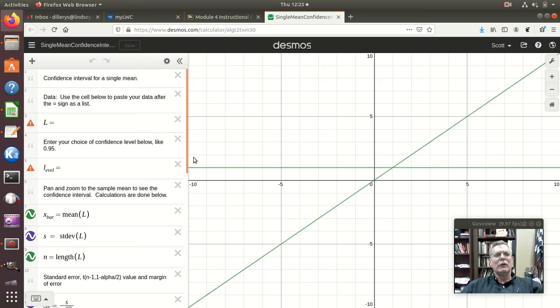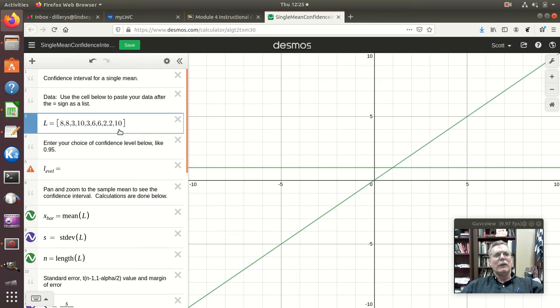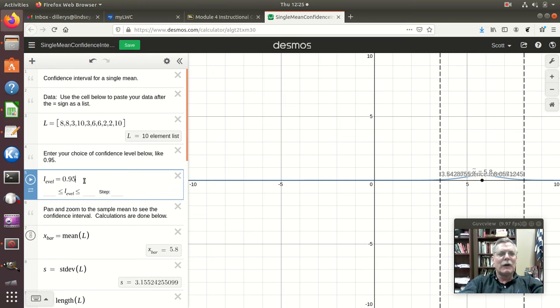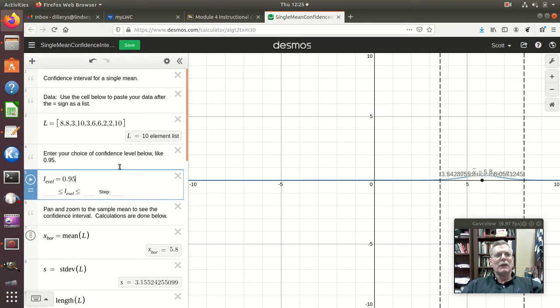And so I go here and just click in there and do a Control-V, and see there, it pasted them as a list of 10 elements, and then it's doing all kinds of weird stuff over here. I haven't given it the 0.95 level yet, okay, so I do that.